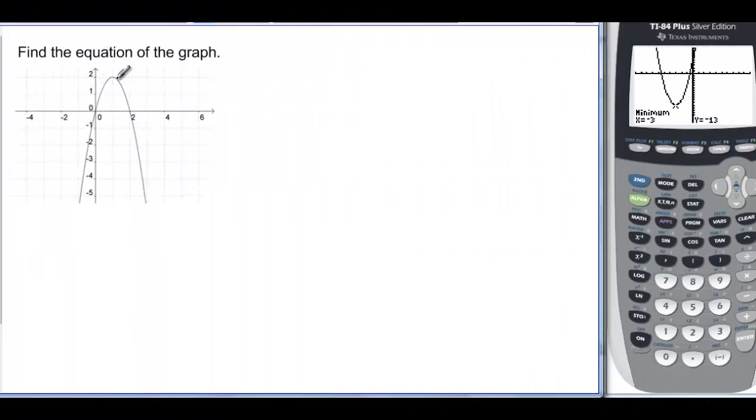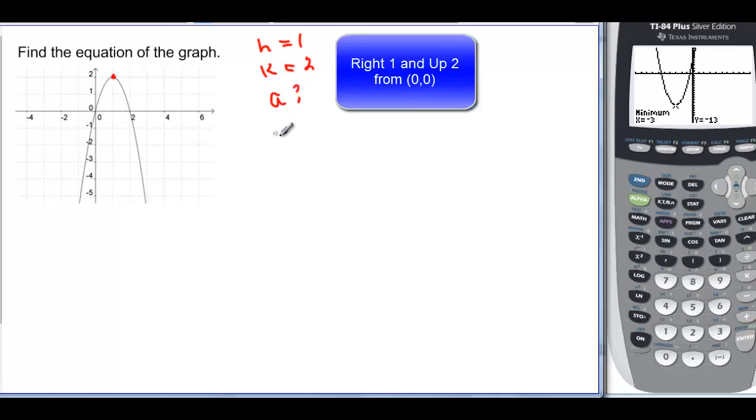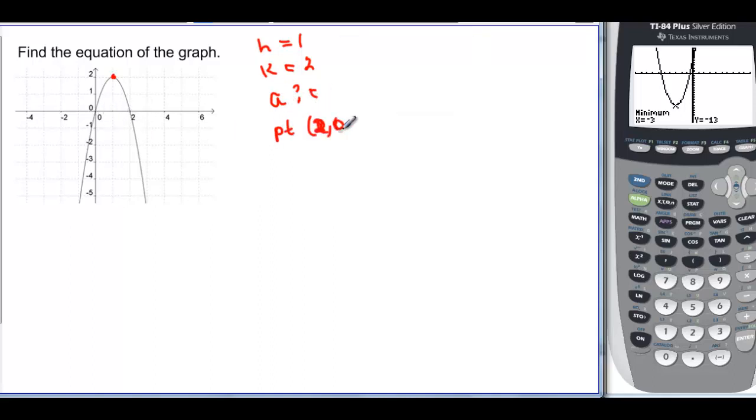Now we have to find the equation completely by ourselves. So first thing we want to know, h = 1. We went over 1, k = 2 because we went up 2. And we need to find a and we should be able to find a point on our graph somewhere. So we have the point (0, 0) or we have the (2, 0) right here. So we have y = a(x-h)² + k. That means x is 2 here, y is 0. So y is 0, we don't know what a is. x is 2 minus my h which is 1 quantity squared plus k which is 2. So 0 = (2-1)², 1² is 1a + 2. Subtract the 2, I have -2 equal to 1a or just plain old a.